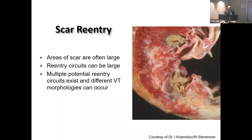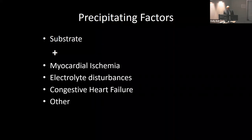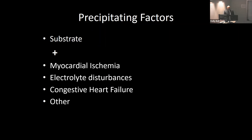This cartoon image shows an actual left ventricle and myocardial cross-section, depicting the scar area. The arrows march through, showing re-entrant arrhythmias in the border zone. This is a combination of having the right kind of scar substrate along with precipitating factors like myocardial ischemia, electrolyte disturbances, or CHF. When patients come in with VT and a prior MI and scar, we don't always know the exact reason.